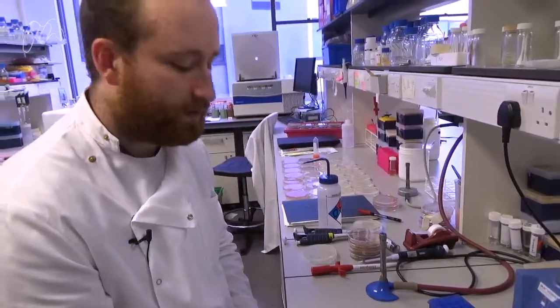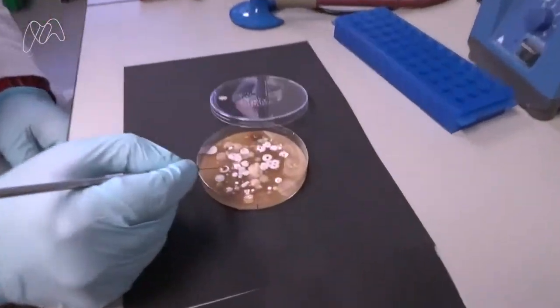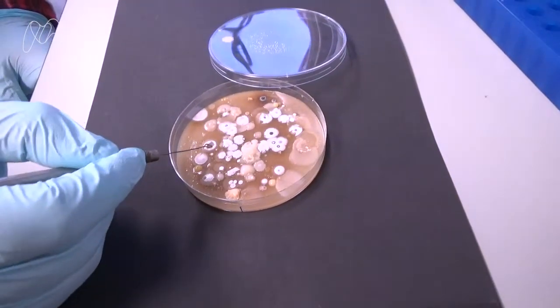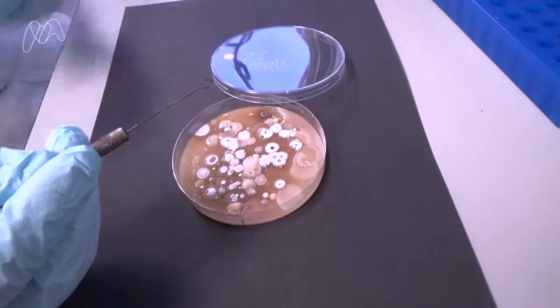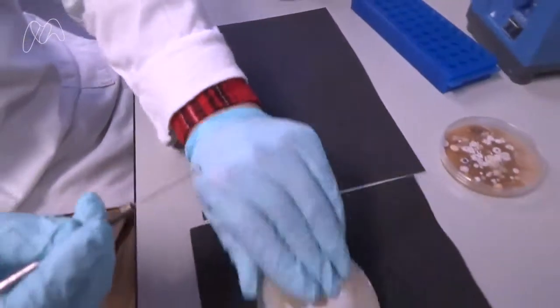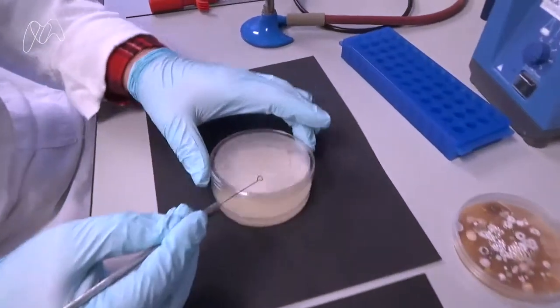After leaving a while to cool down we pick a part of the bacteria so that it's on the loop and then we put this onto a fresh plate.